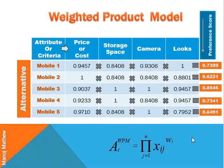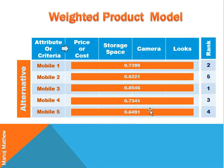Based on the preference score, we can rank the alternatives or mobiles. From this rank we can say that Mobile 3 is the best alternative. Even if Mobile 3 is not available in the market, we can go for the next best, that is Mobile 1. Thank you.